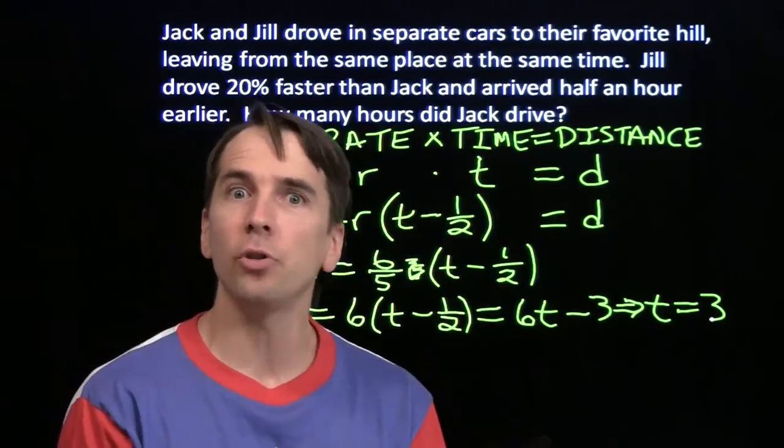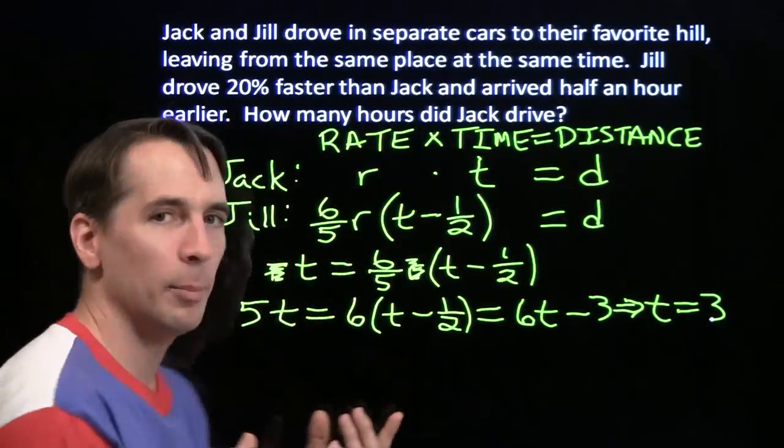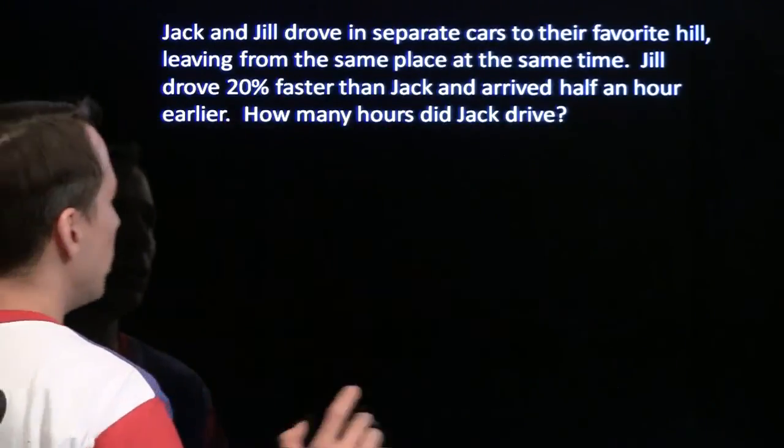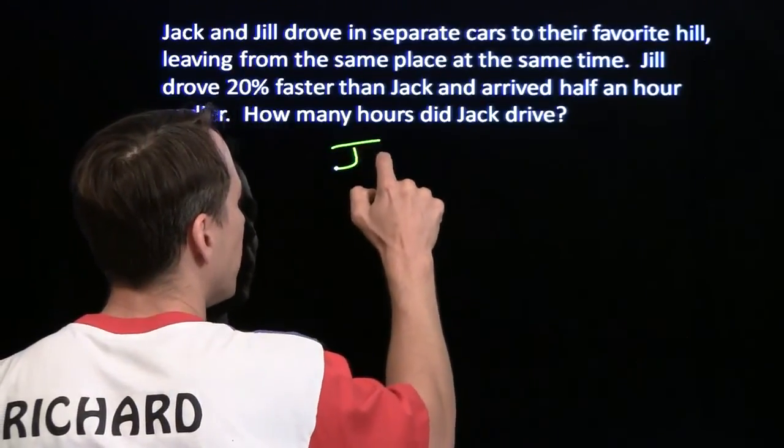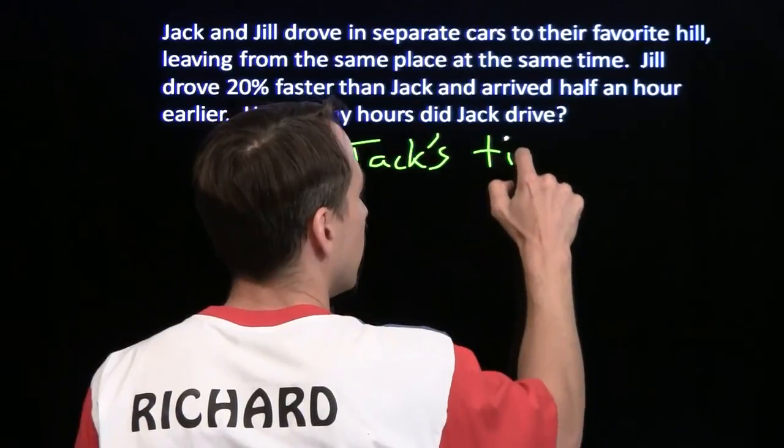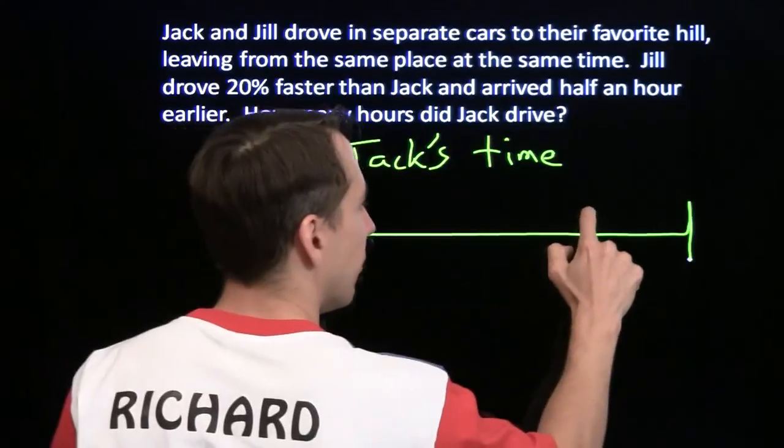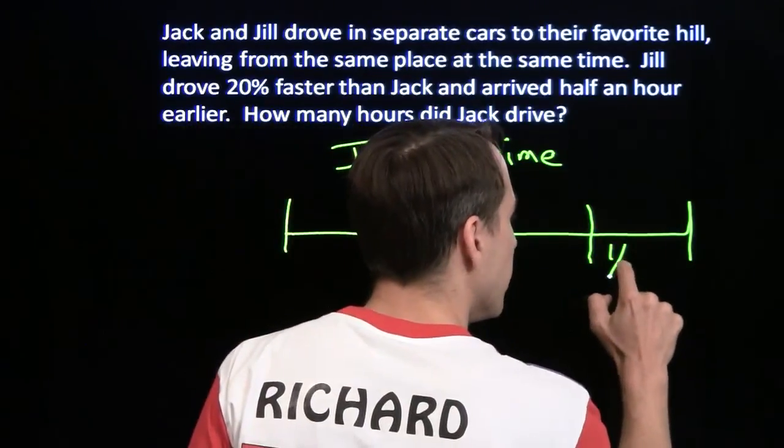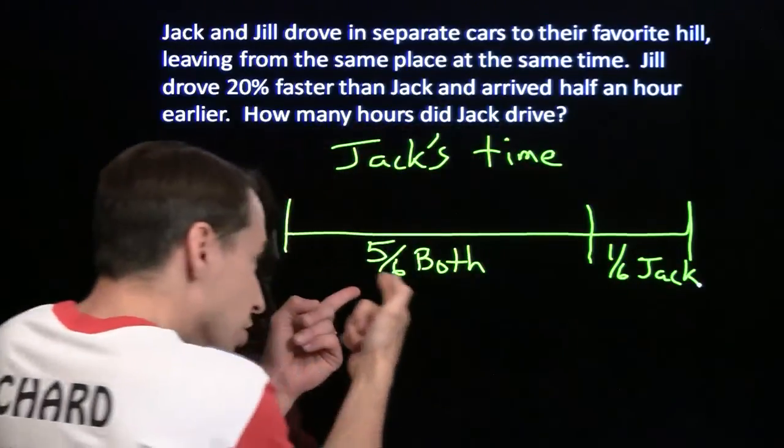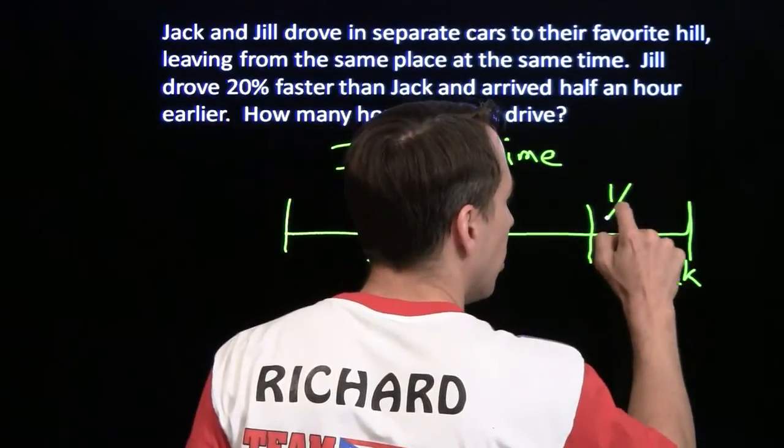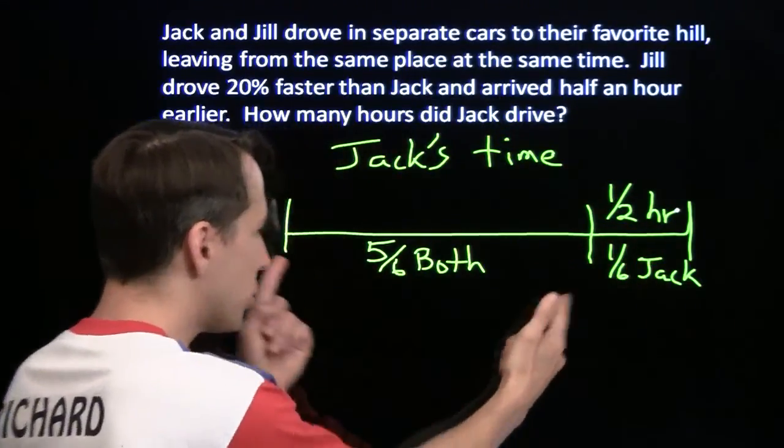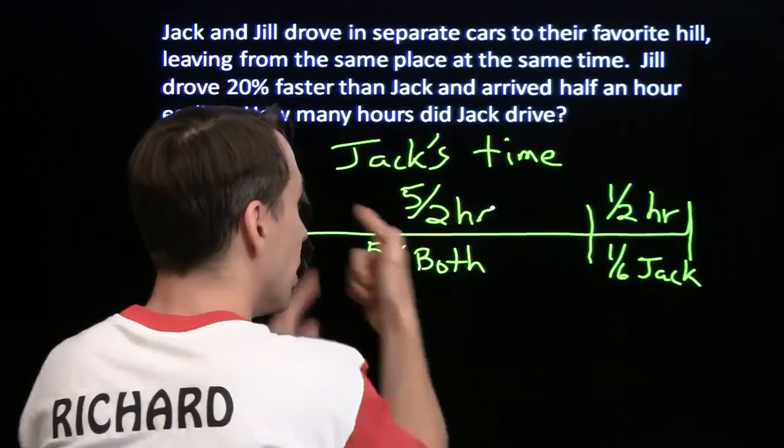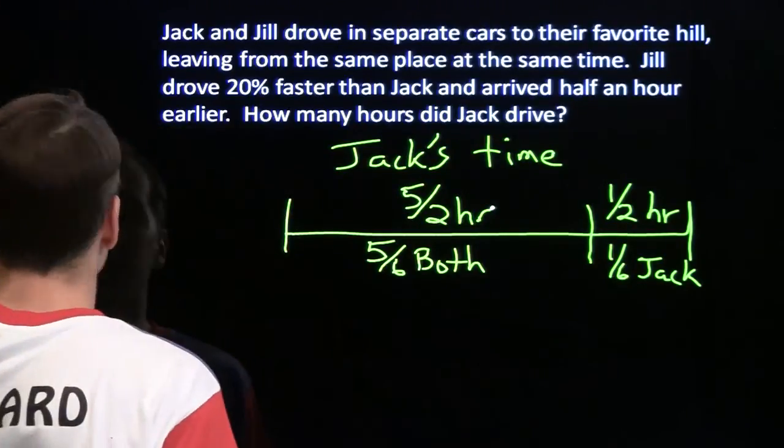And now I can solve this problem with a picture. Check this out. Now that we know that Jill's time is 5 sixths Jack's time, I'm going to draw a little picture here of Jack's time. So this is all of Jack's time. 5 sixths of it is when they're both driving. 1 sixth of it is just Jack. Well, we know that Jack is driving alone for half an hour. This part of the trip is 1 fifth this part of the trip. This part's 5 times that part. That means this part of the trip is 5 halves hours. So Jack's time is 5 halves hour plus 1 half hour. That's 3 hours. Same thing we got back here.